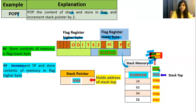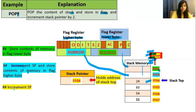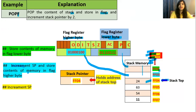Now it transfers the contents of memory at FF03 into the flag higher byte. Now those two memory locations are empty, and FF04 becomes the stack top. The stack pointer increments by 1 from FF03 and should indicate FF04, because now this is the address of the stack top.